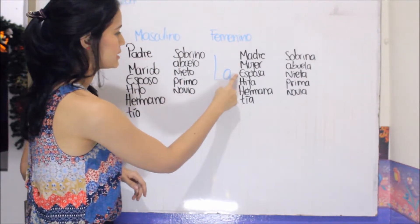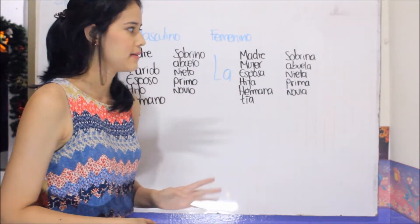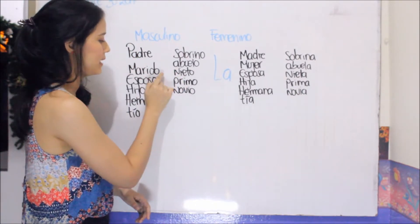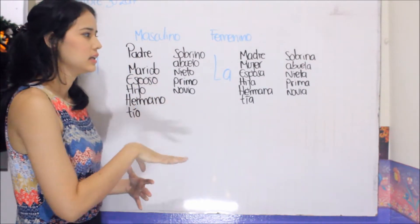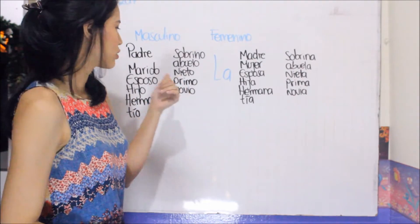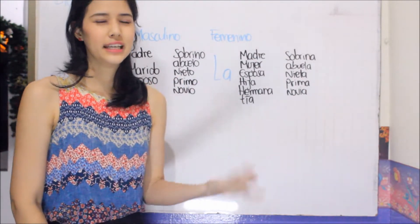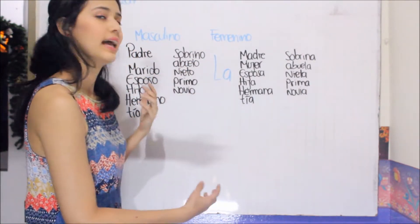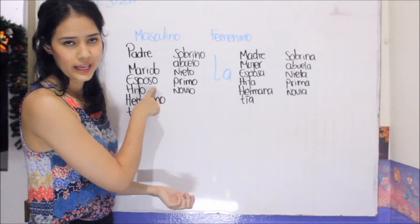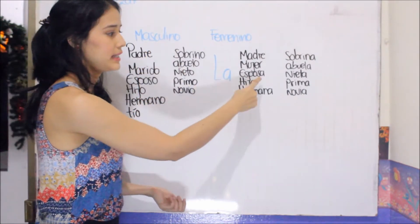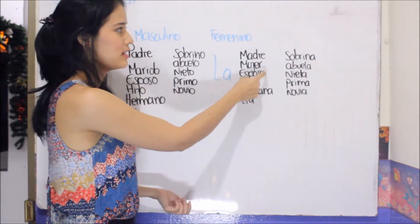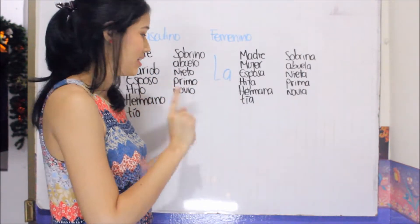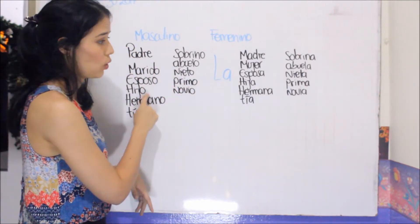We have 'mujer' and 'esposa' for wife — both mean the same, you can use whichever you want. The same happens for male: 'marido' or 'esposo'. In Spain it is more common to use 'marido' and 'mujer', but here in Latin America we usually hear 'esposa' or 'esposo'. Notice that this word ends in O — and that is male — while this one ends in A — and it is female. So you can start seeing which ending indicates each gender. Now we have son as 'hijo'.